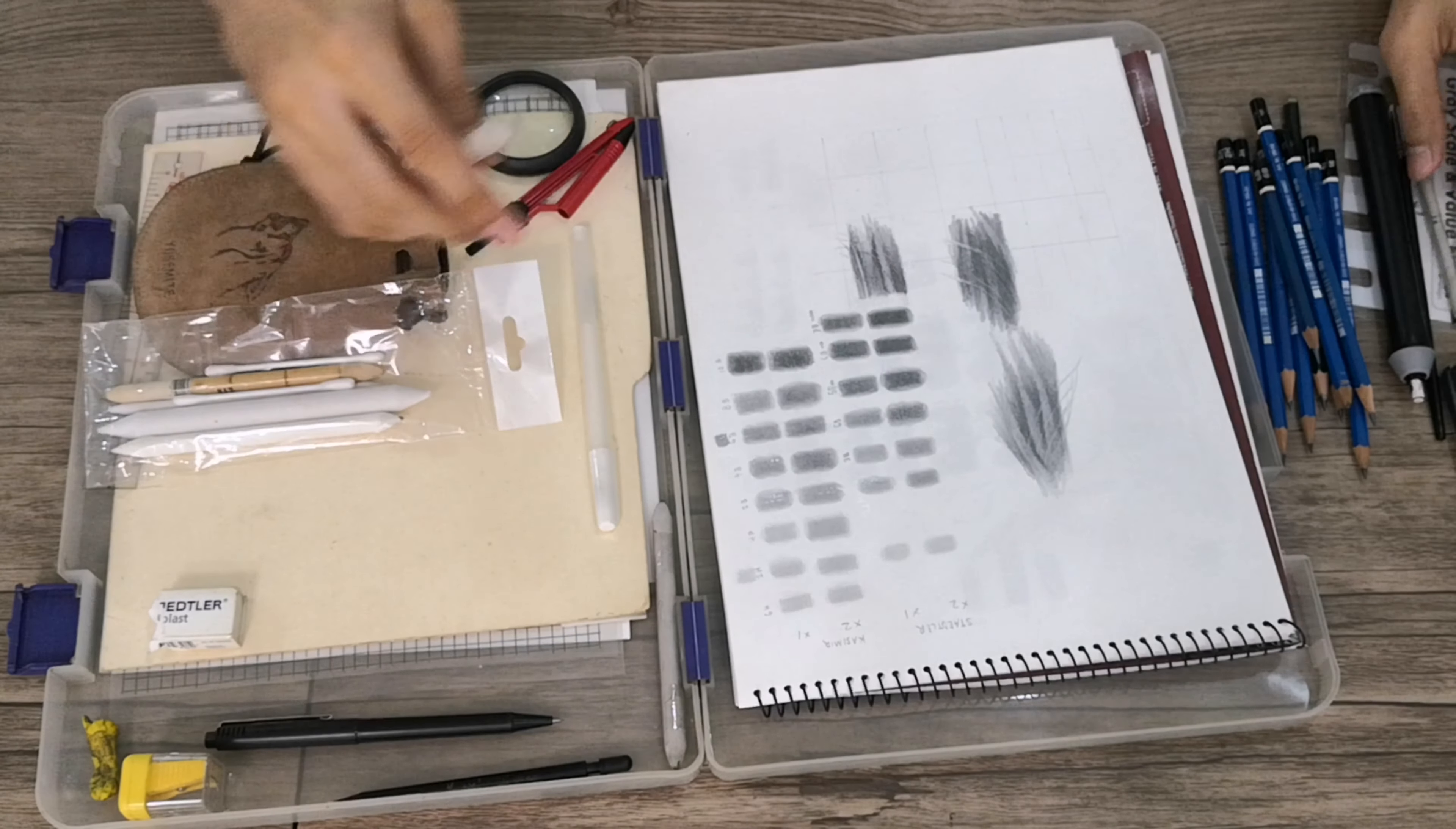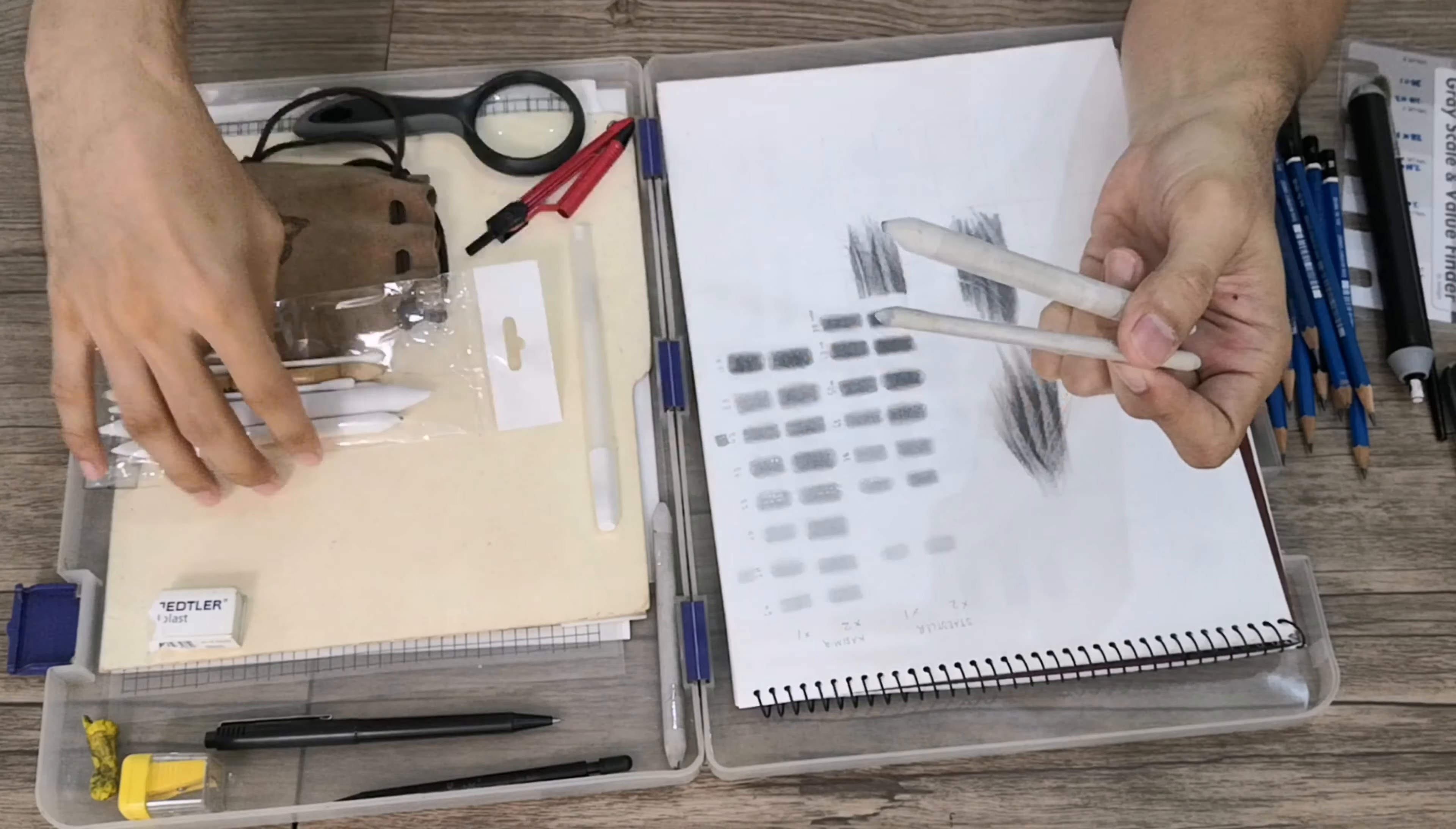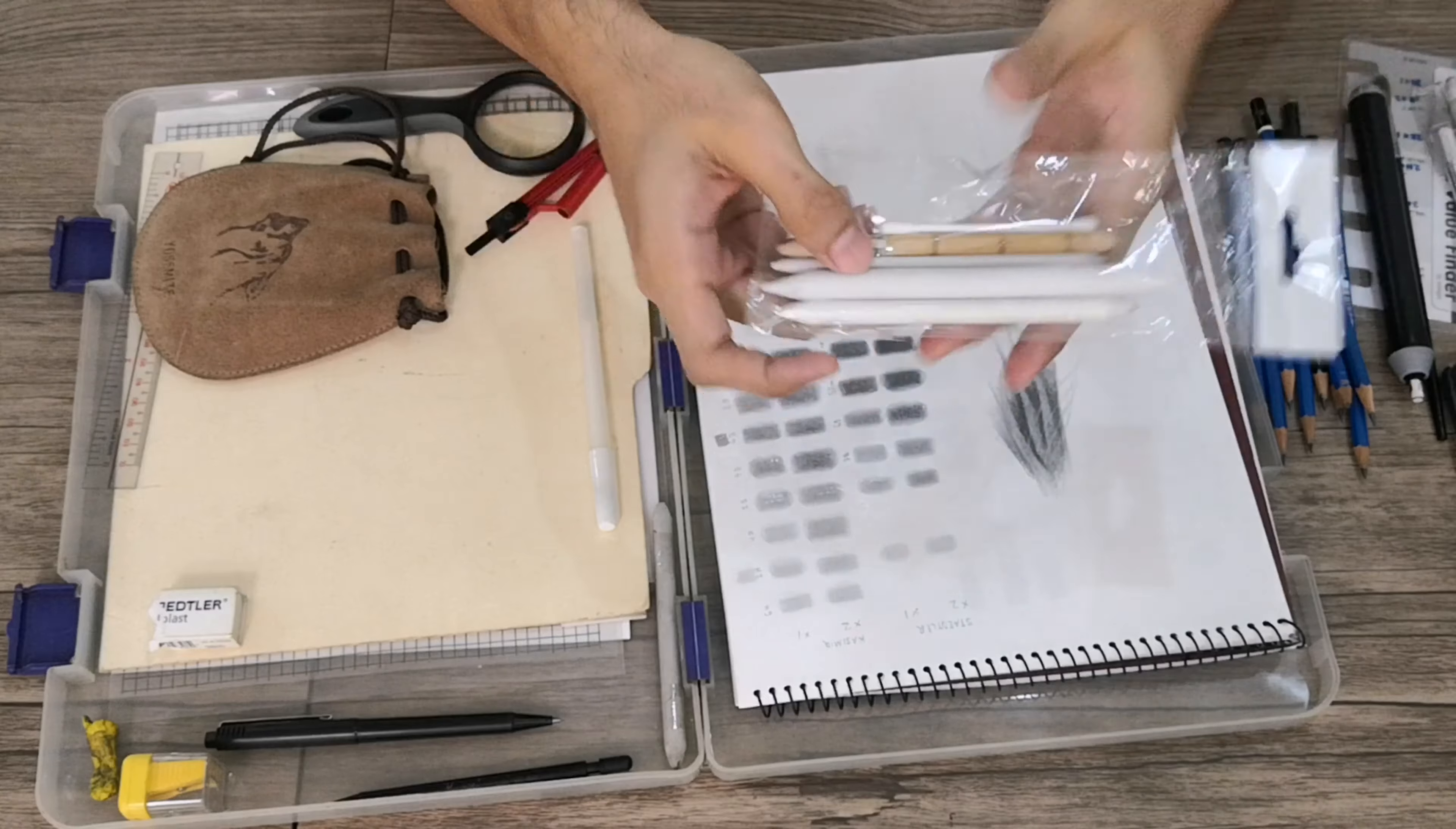Also here I have the different blending stumps. It depends on the size, the smaller one and the larger one. I also have some unused stumps here. I can also buy this at any art supply.